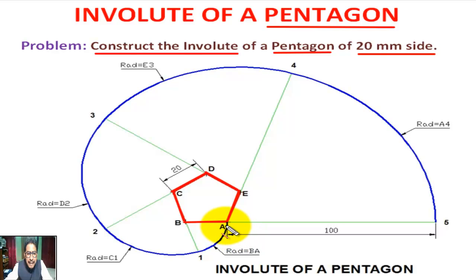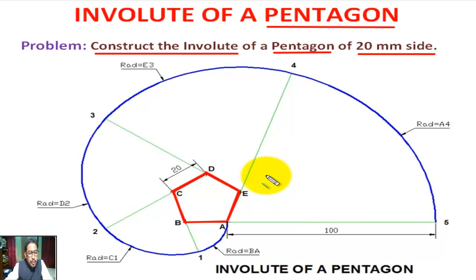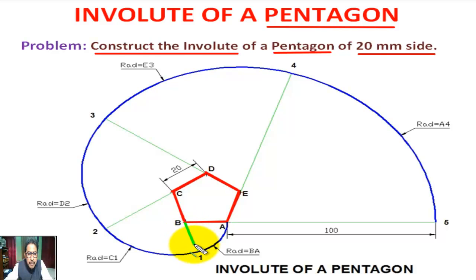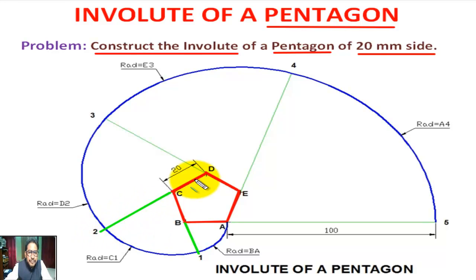Mark the vertices: this is point A, this is point B, this is point C, this is point D, and this is point E. Now we extend or produce the CB sides. We extend or produce the DC sides.